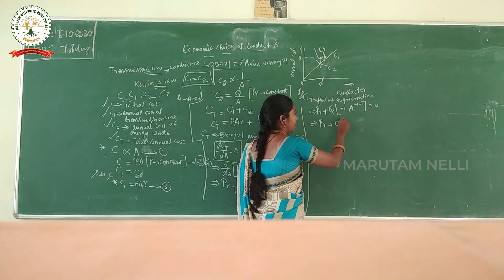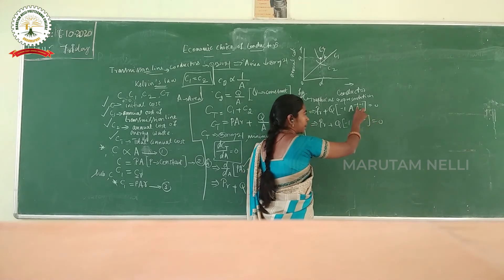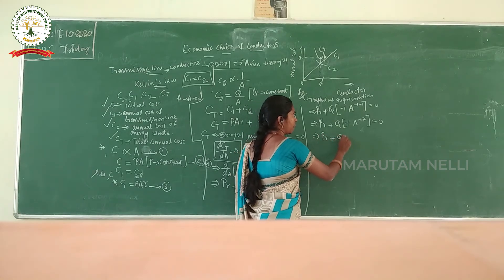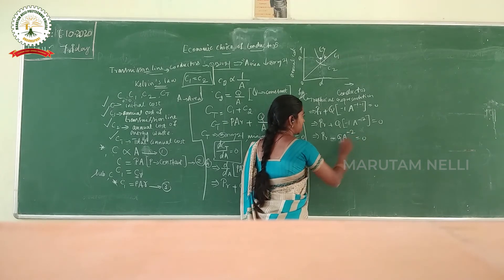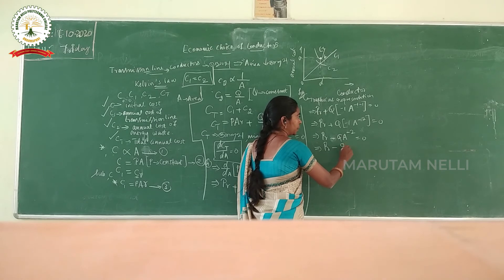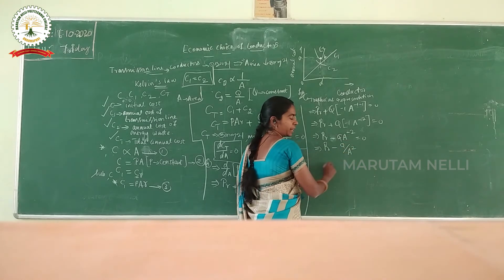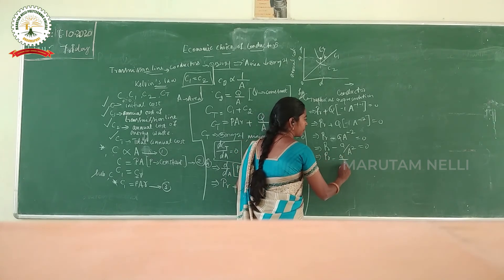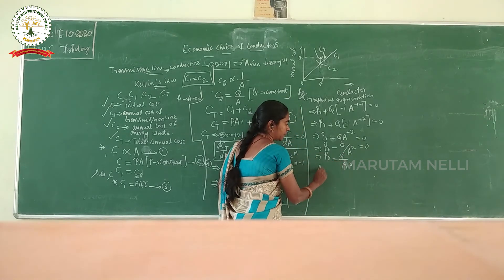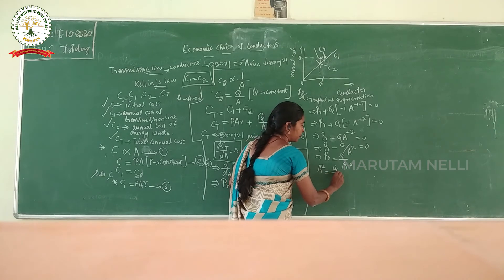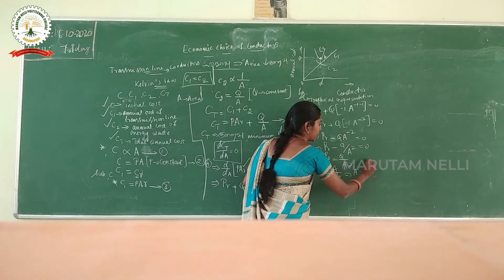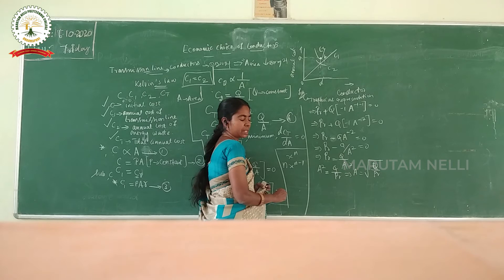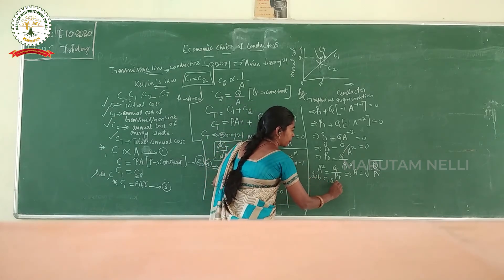After PR plus Q of A power minus 2 equal to 0. Q of PR equal to minus A power minus 2, then A square. If A equal to 0, then A square root 2 by PR.